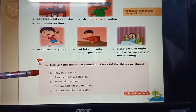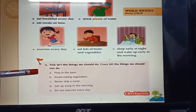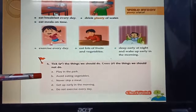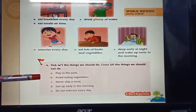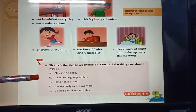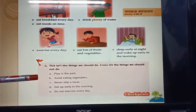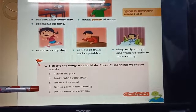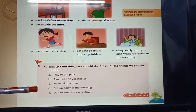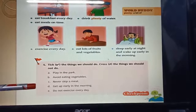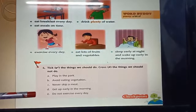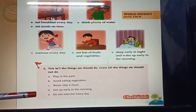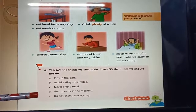Let's discuss the answers. A: play in the park — it's right. B: avoid eating vegetables — it's wrong. C: never skip a meal — it's wrong, we should never skip a meal. D: get up early in the morning — it's right. E: do not do exercise every day — it's wrong, we should do exercise every day.